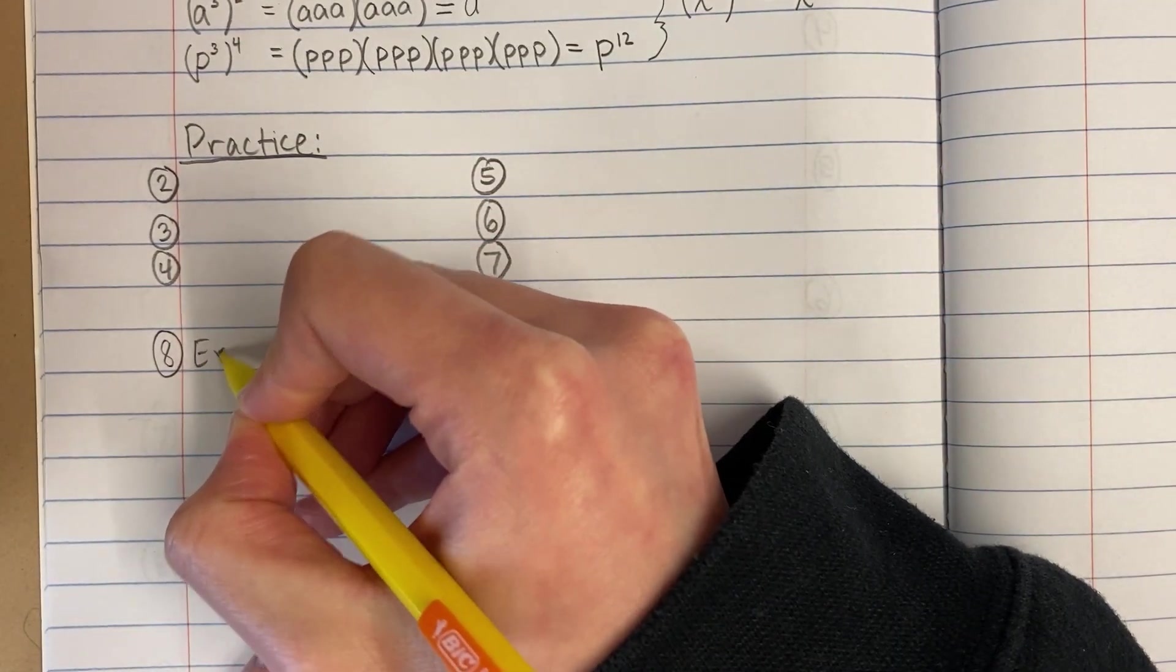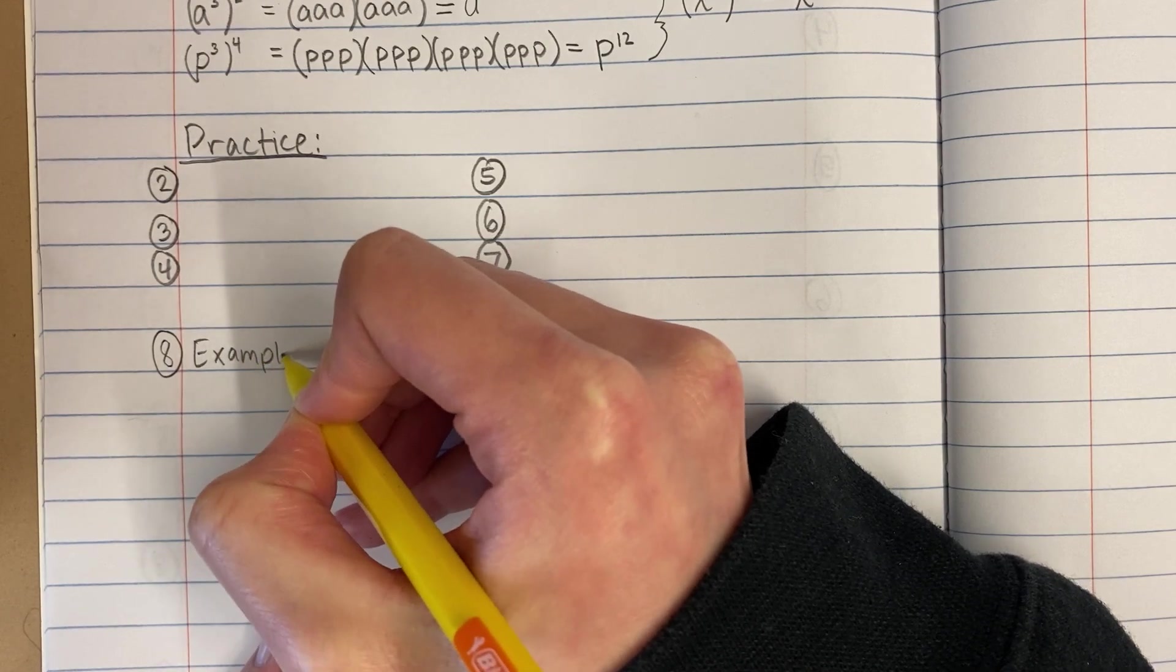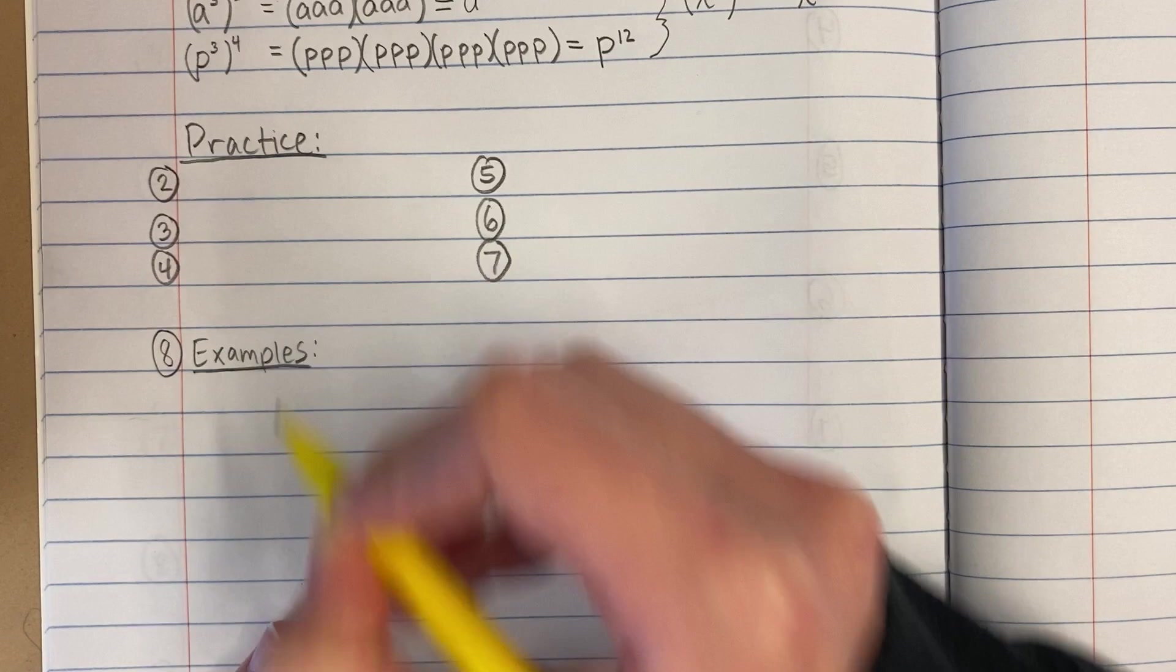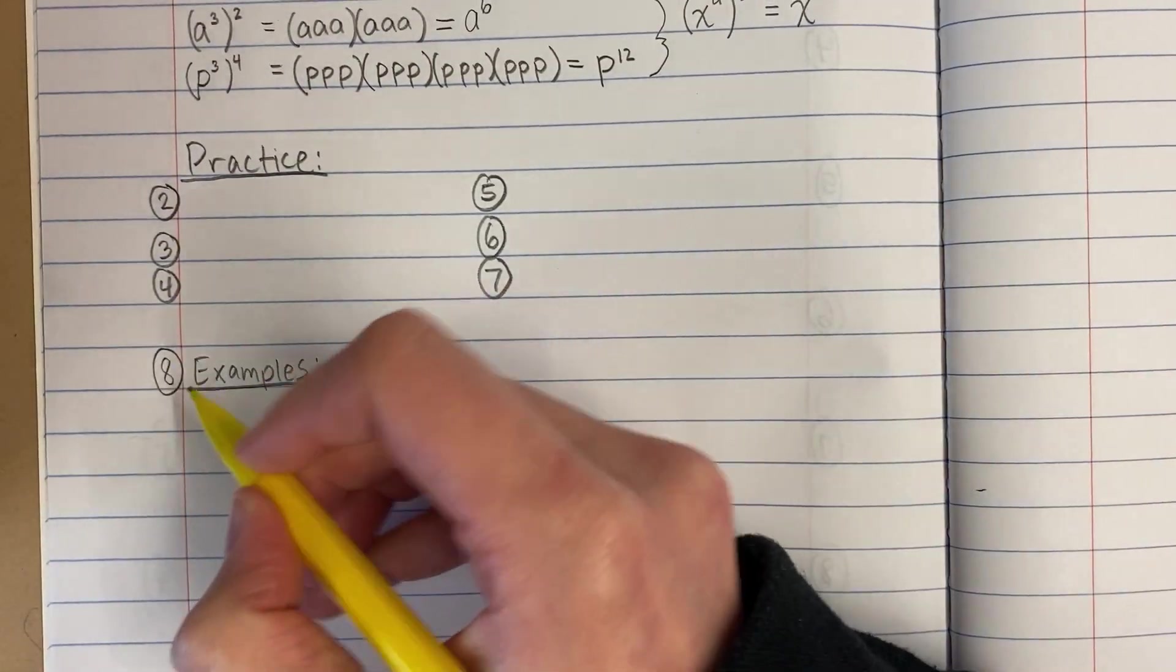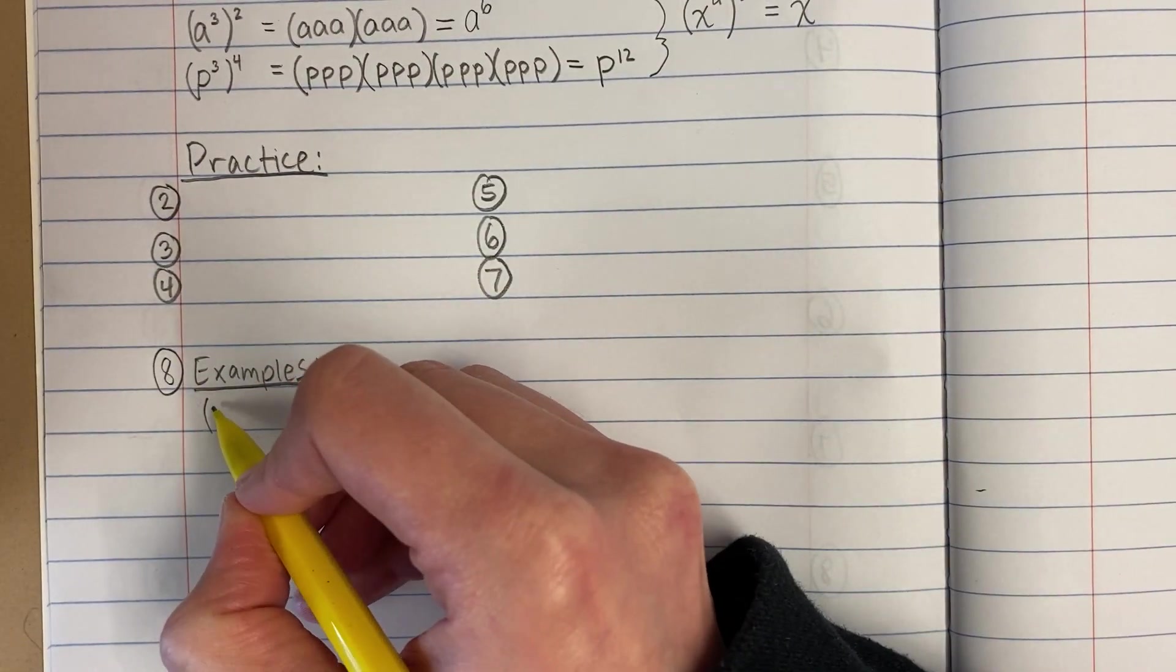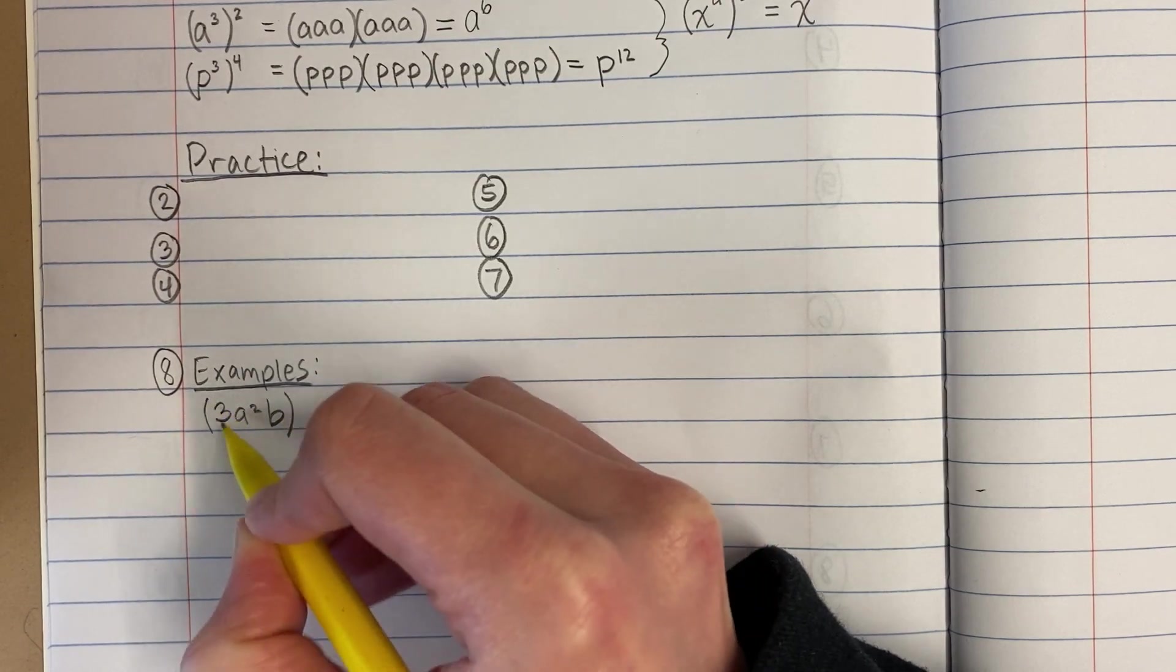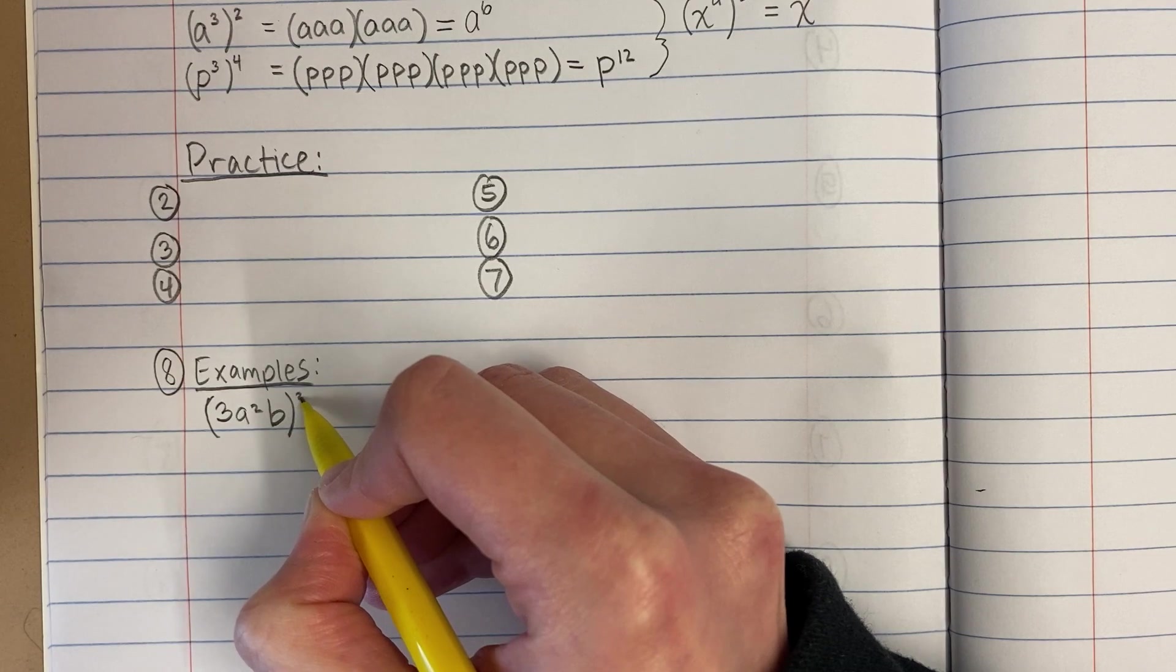Welcome to question 8. Let's get a little bit more complicated. Let's say I have something like this: 3 a squared b, and everything inside these parentheses is to the third power.